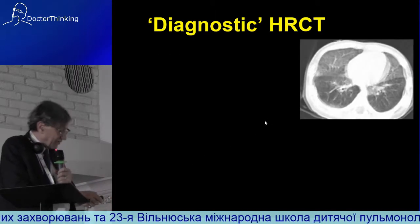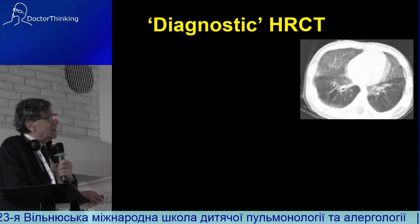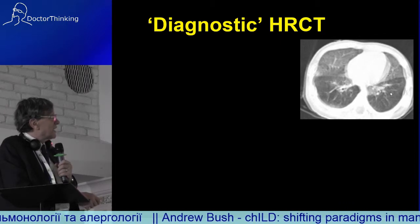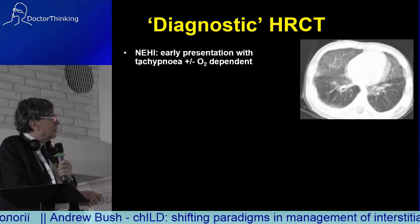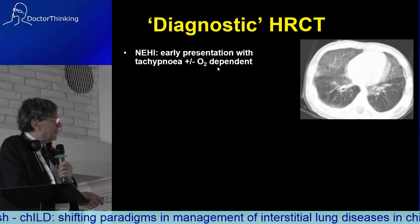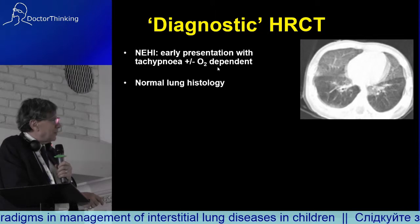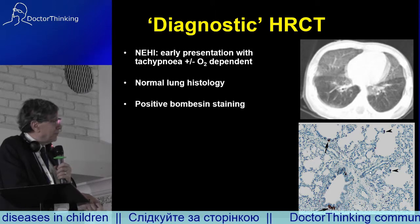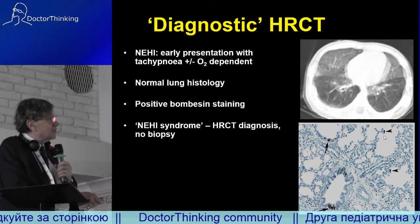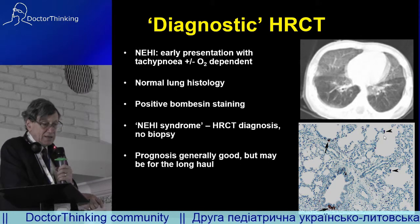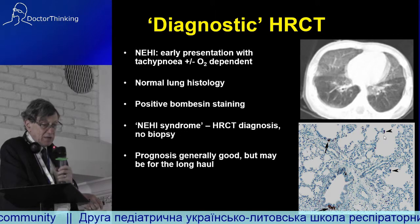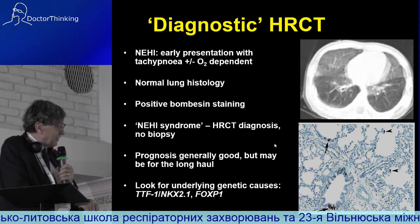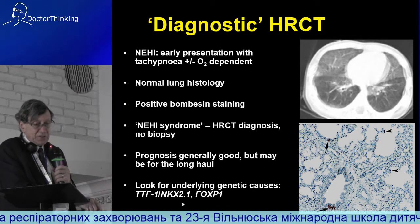This is another diagnostic CT scan. You can see right middle lobe and lingular ground glass with perihilar shadowing — this is classical of NEHI. It presents with tachypnea and oxygen dependence. Lung histology is normal but the biopsy stains positive for bombesin, and you can make the diagnosis just on the CT scan in many cases.